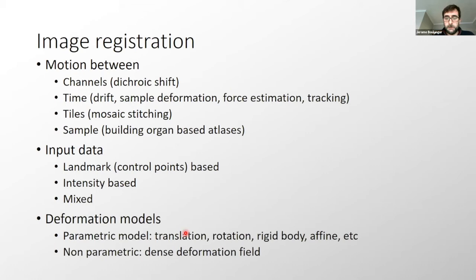I was talking in the first slide where you want to process your image, you want to register image between different time points or different channel, you want to stitch your image in a big tile and adjust the small shift between the tiles, you want to build an atlas of your organ, like a brain. This is called image registration. The input data can be some landmark or the intensity. Landmarks are control points and you can also have a mixed input combining landmark and intensity. You can have different deformation models. You have a parametric model like translation, rotation, rigid body, affine. You can have a non-parametric model and try to estimate a dense deformation field.